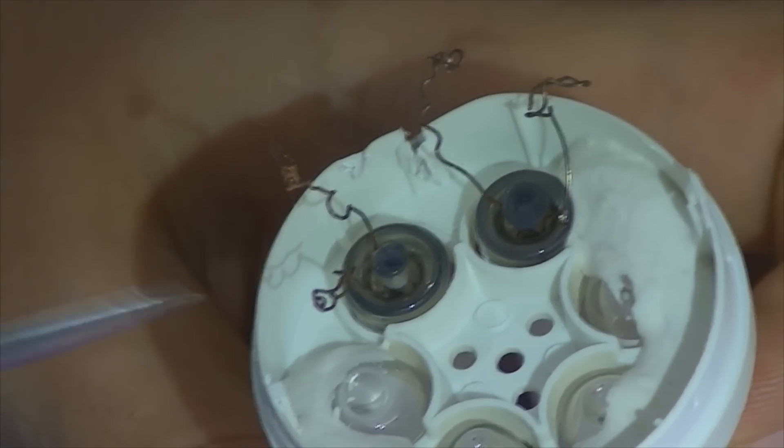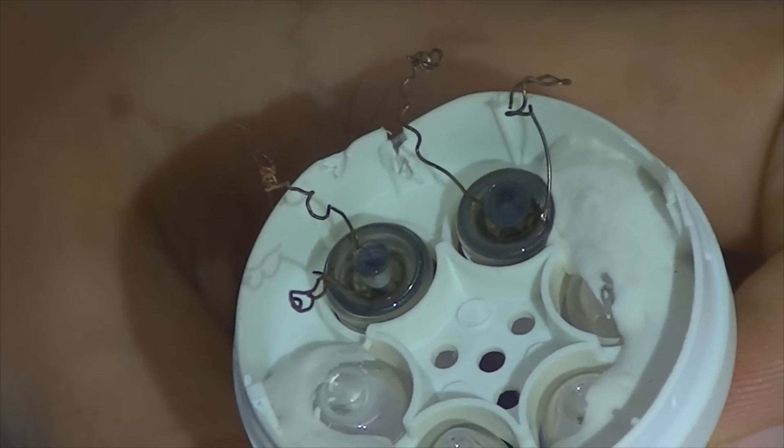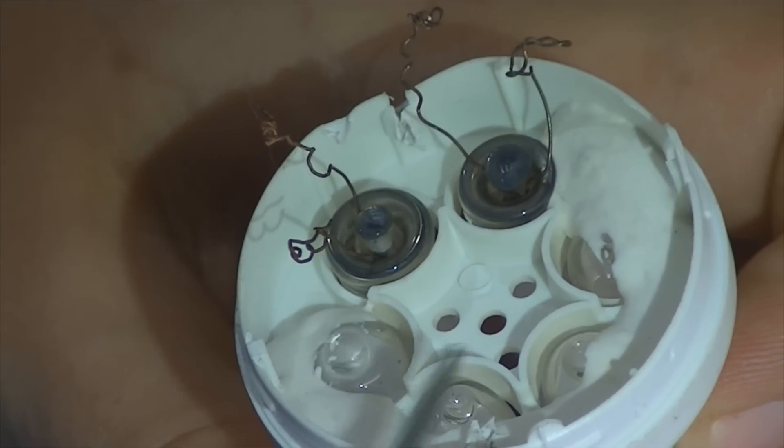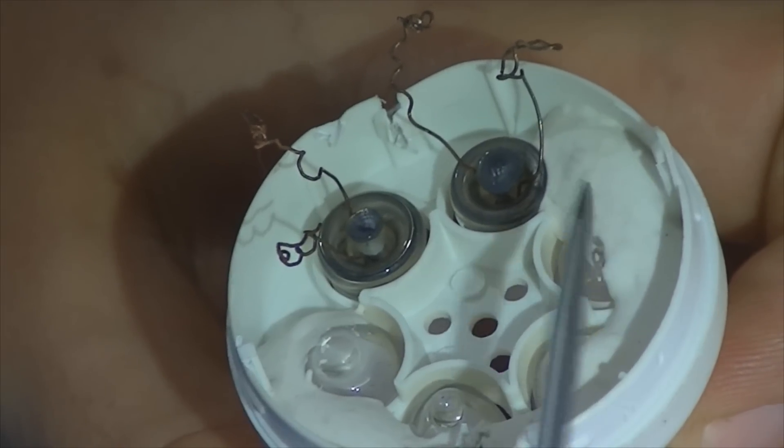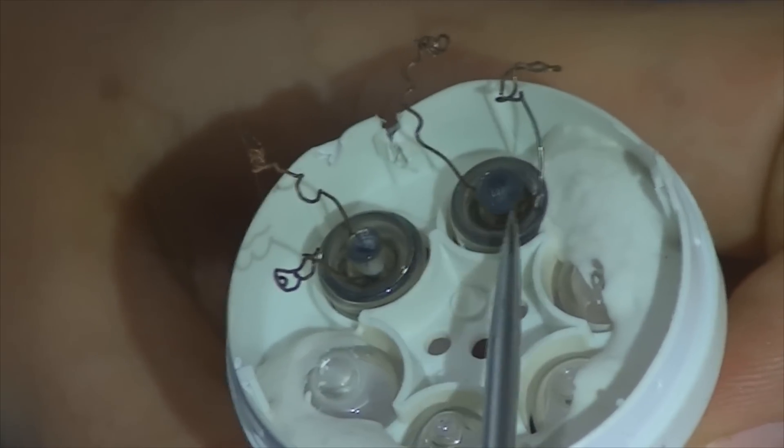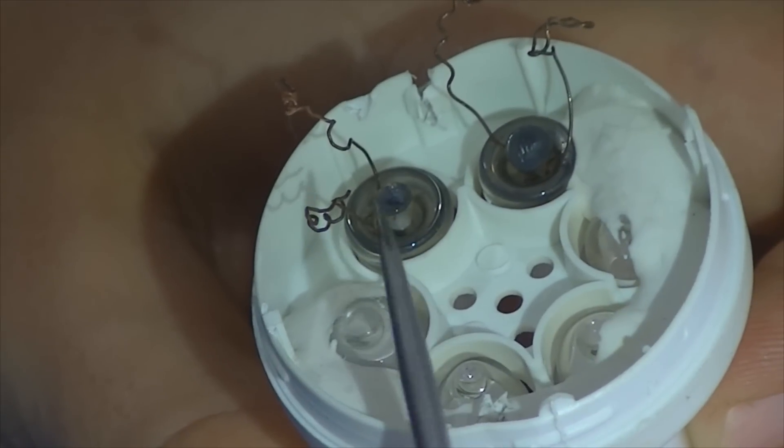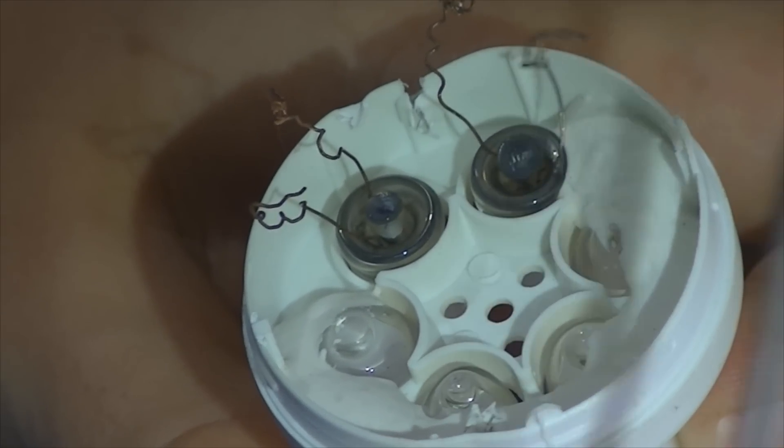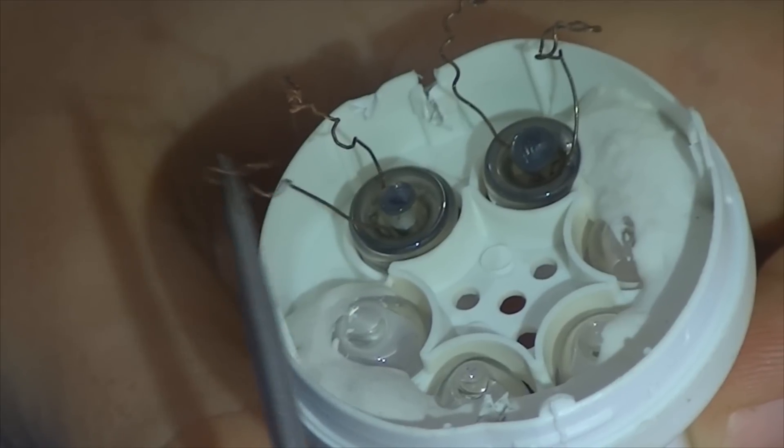Observando aqui esses filamentos da lâmpada, vemos que dois deles saem de dentro de um tubinho, e do outro lado também tem dois filamentos que saem dentro de outro tubinho. Nós só vamos utilizar um filamento de um lado e outro filamento de outro lado. Pode ser qualquer um. Posso pegar este aqui e este aqui.